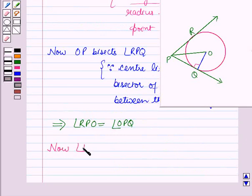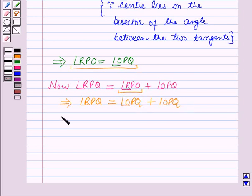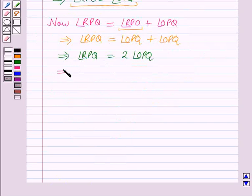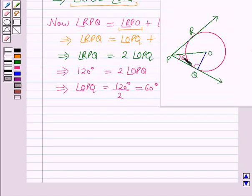Now angle RPQ can be written as angle RPO plus angle OPQ, which further implies angle RPQ is equal to angle OPQ plus angle OPQ, which implies angle RPQ is equal to 2 into angle OPQ. Therefore angle OPQ is equal to angle RPQ by 2 which is equal to 120 degrees by 2 which is equal to 60 degrees.